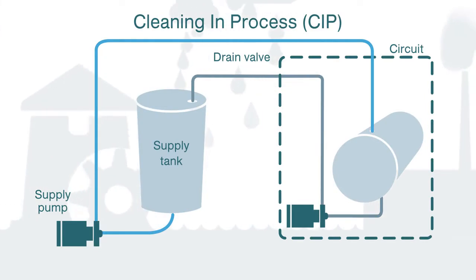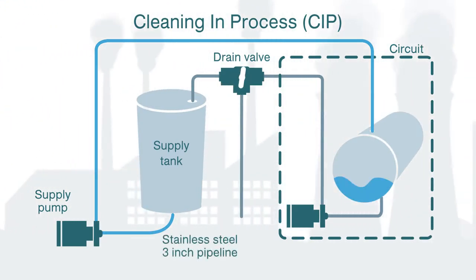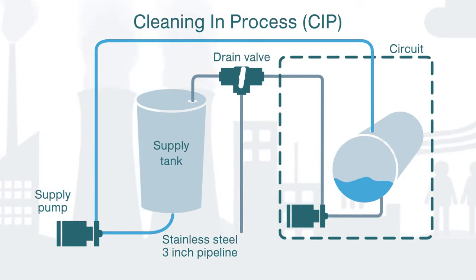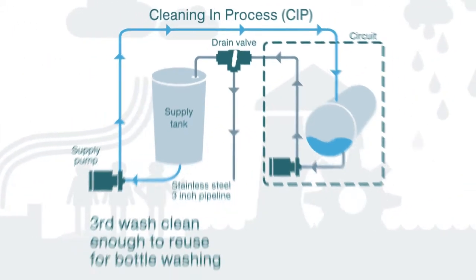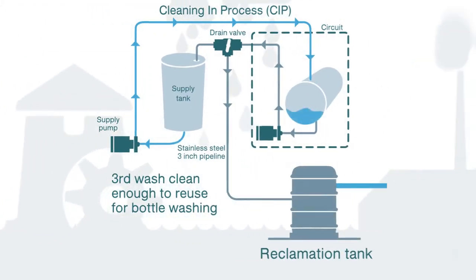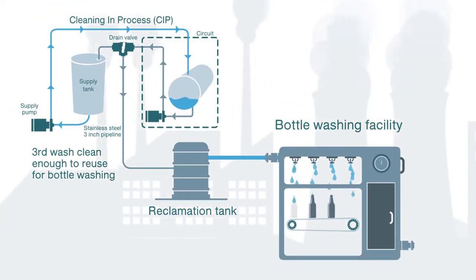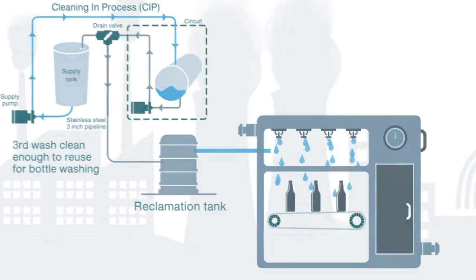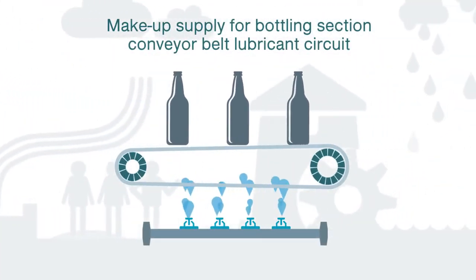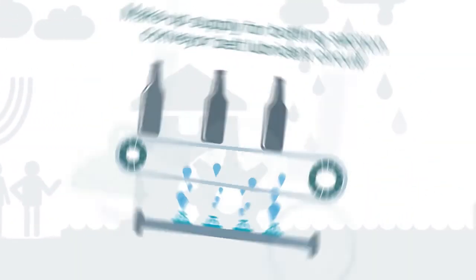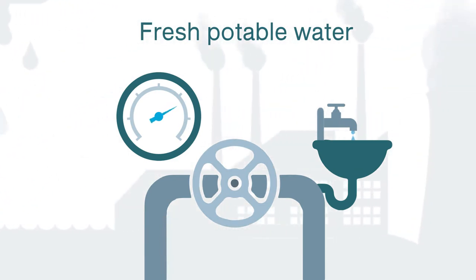A 40-metre stainless steel 3-inch pipeline was installed from the cleaning-in-process (CIP) rinse tanks to divert water to a reclamation tank, to serve as a top-up supply to the bottle washing facility and as a make-up supply for the bottling section conveyor bulk lubricant circuit. This resulted in offsetting the need for fresh, potable water for these applications.